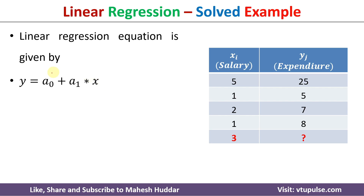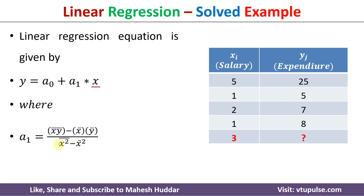We need the formulas to calculate a0 and a1. We know x equals 3, but we don't know a0 and a1 yet. a1 equals the mean of x*y minus the mean of x multiplied by the mean of y, divided by the mean of x² minus the square of the mean of x. And a0 equals the mean of y minus a1 multiplied by the mean of x.